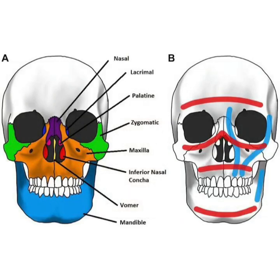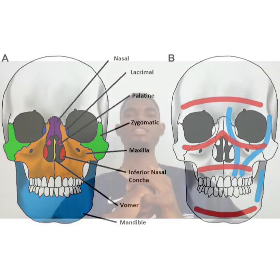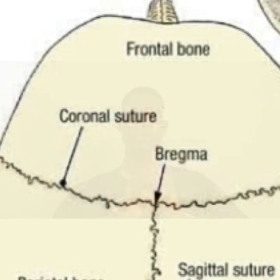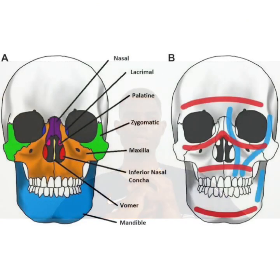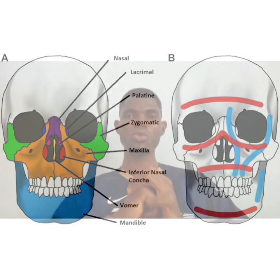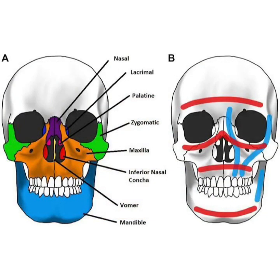The frontal bone, which we said is a bone of the calvaria, is sometimes also included as a bone of the facial skeleton. The first facial bone is the zygomatic bone, also known as the cheek bone — there are two in number. They articulate with the frontal bone, the maxilla, the temporal bone, and the parietal bone.